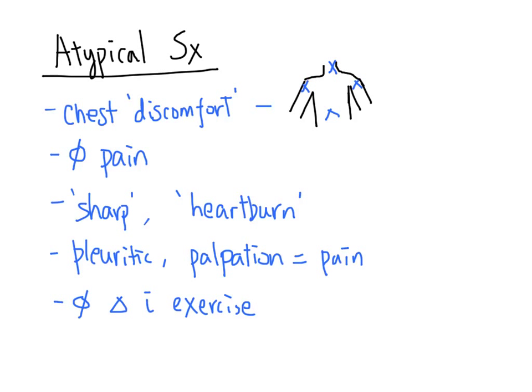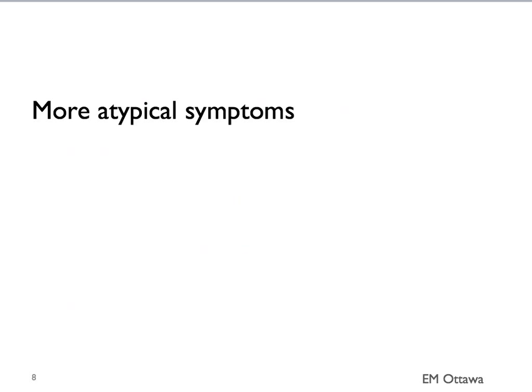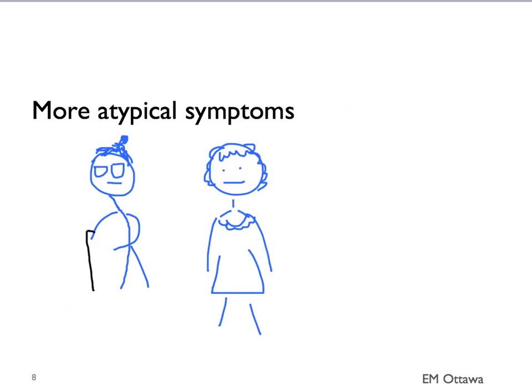Because patients can have these very atypical symptoms, we want to have a very low threshold for investigating patients — if not, we will miss them. We see more atypical symptoms in the elderly, women, and diabetics.